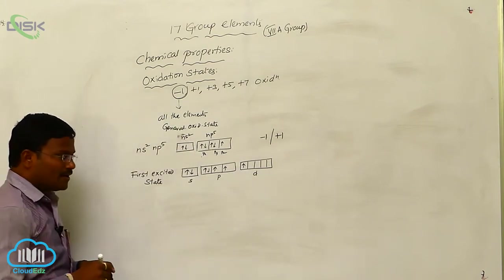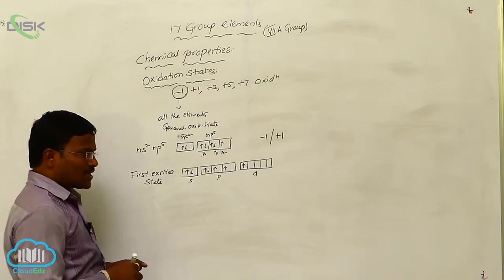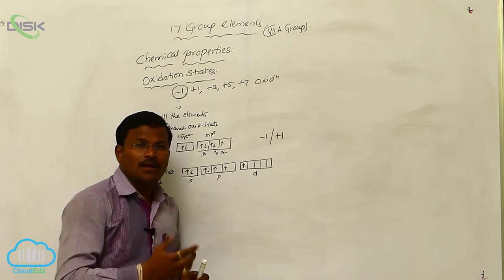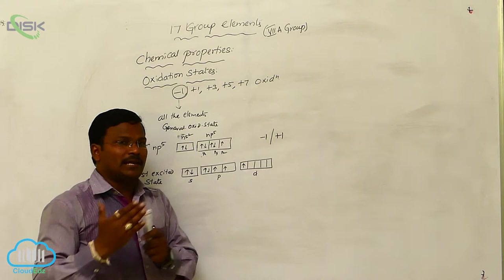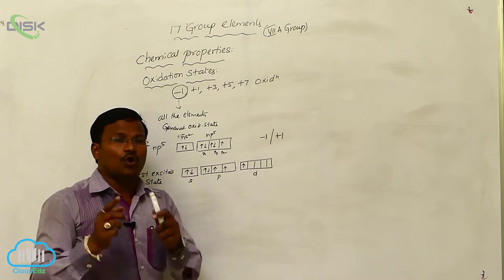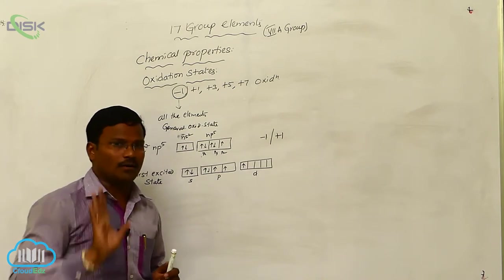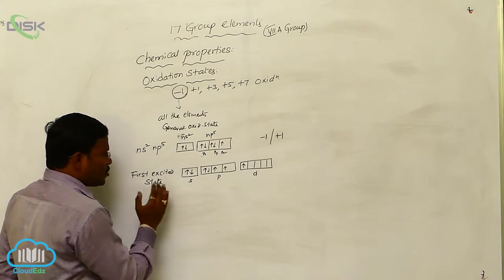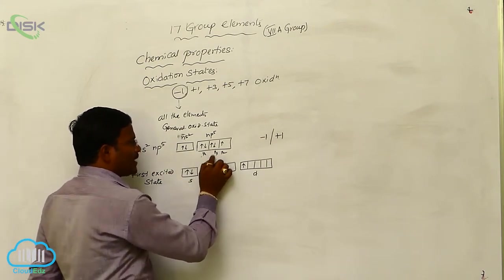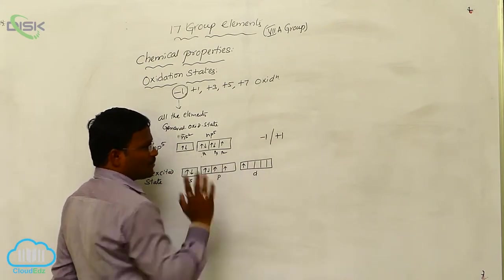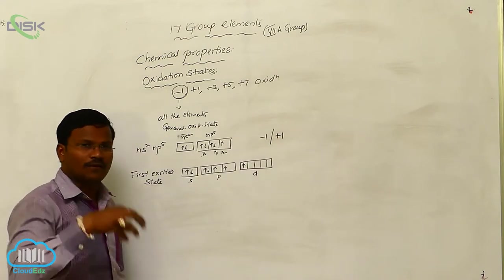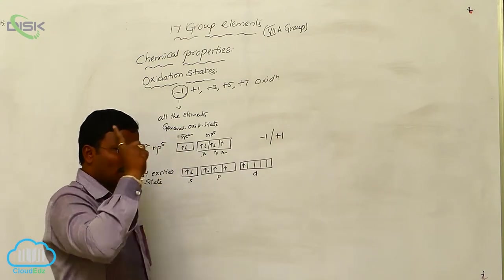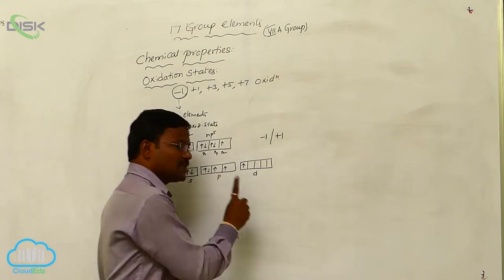In our discussion of the anomalous behavior of fluorine, we can explain when compared to remaining elements: fluorine is out of d orbital. That means in fluorine, there is no excitation of a p electron from the py orbital to the d orbital because of the absence of a d orbital in the fluorine atom. Hence, fluorine can exhibit only one oxidation state: minus 1.